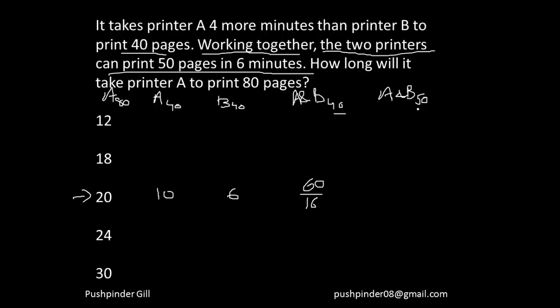Going from 40 to 50 pages is a journey of 5 by 4. Multiplying by 5 by 4 will give 50 pages. If the pages are multiplying by 5 by 4, the number of minutes taken will also multiply by 5 by 4. So number of minutes is going to become 60 by 16 into 5 by 4. If I cut this, this is going to be 75 by 16 which is nothing but 4 point something. Now the crucial part of the question comes.